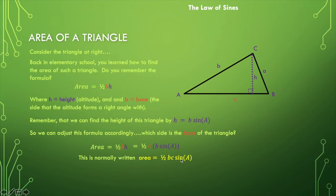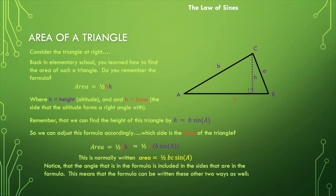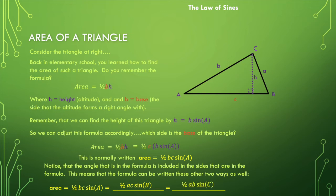What if we know other sides and a different angle? We can find two other variations of this formula. Notice that the side lengths are always the sides not sharing the same letter as the given angle. So we can also write: area equals one-half ac·sin(B), or area equals one-half ab·sin(C). In all three cases, we have two side lengths and the angle between them — the included angle.